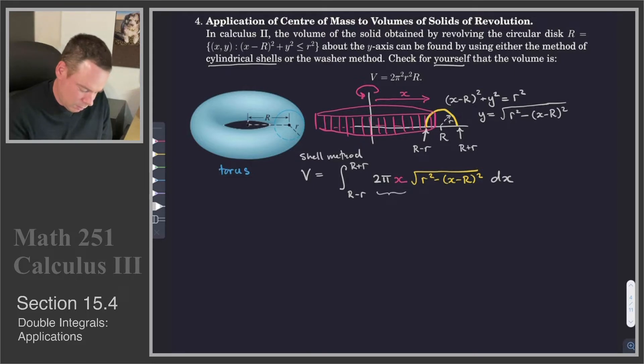That's the shell method. The way we wrote it in Calculus 2 was it's 2π times the radius times the height, because that's the surface area of a cylinder. So there's our integral that we need to compute.